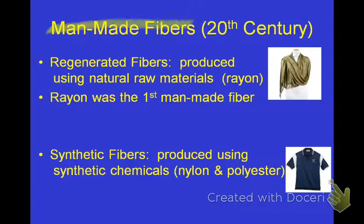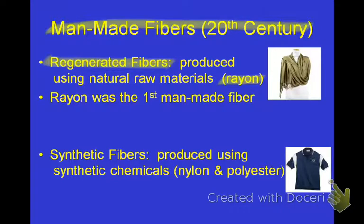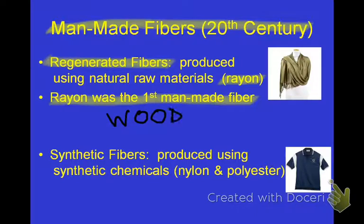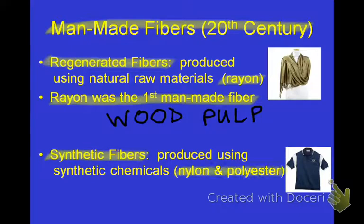Man-made fibers came on the scene in the 20th century, so before that all fibers were natural — either from plants or animals. There are a couple different types of man-made fibers. One is called regenerated: produced using natural raw materials, like rayon. Rayon was the first man-made fiber, made from wood pulp — so from plant material. Synthetic fibers are completely produced in the laboratory, such as nylon and polyester.